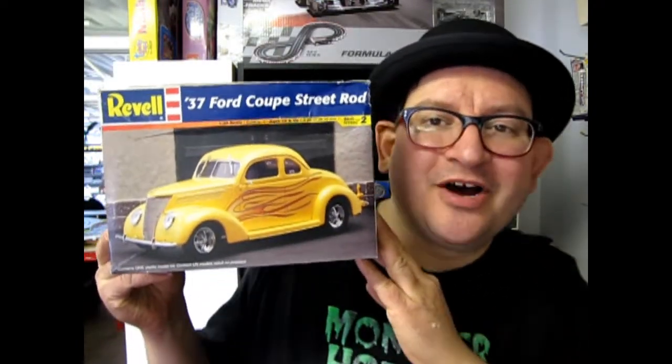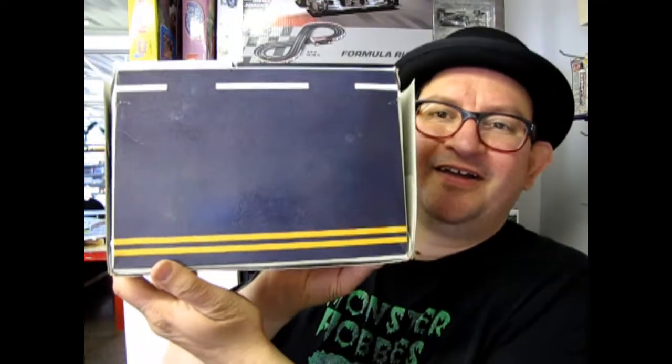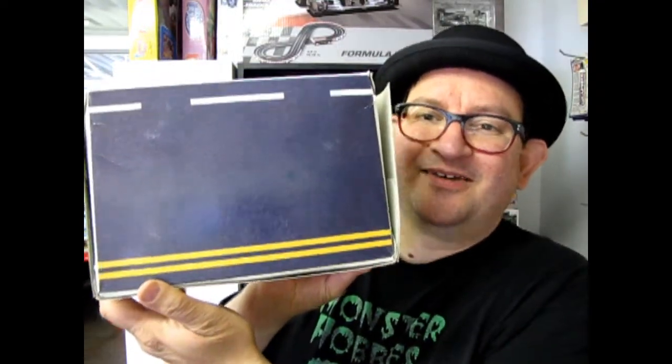Well, we hope you enjoyed that episode of Monster Hobbies What's in the Box, where we looked at the Ravel 37 Ford Coupe Street Rod Kit. And if you actually turn it over, you can hit the streets with your street rod. But seriously folks...